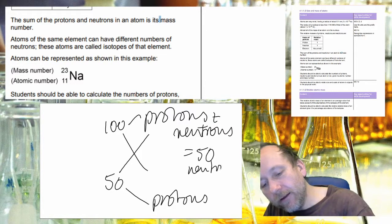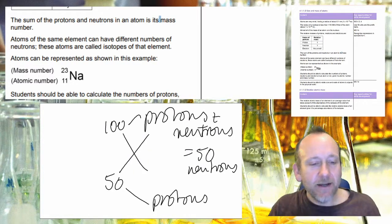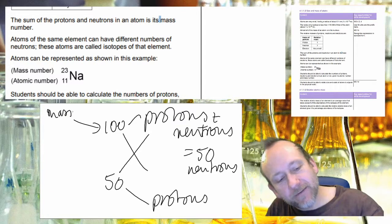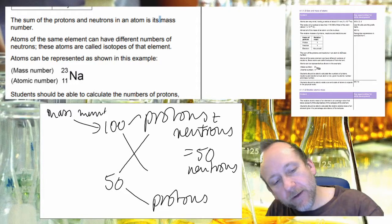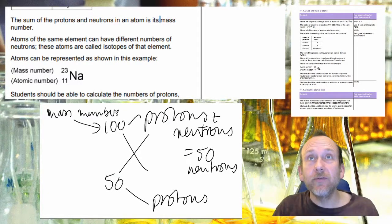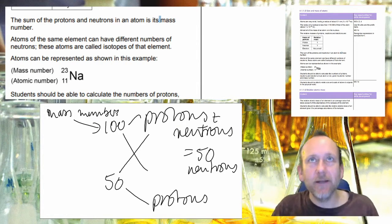So you can get the number of neutrons by taking away the smaller number from the bigger number, so that would give you a number of 50 neutrons here. So why not put 50 neutrons at the top? Well because actually the mass number which is the top number, which has most of the mass of the atom in it for our purposes, is actually more useful for chemists than just a number of neutrons.